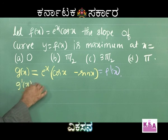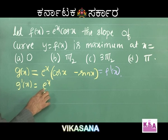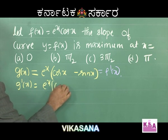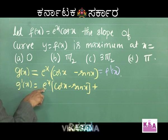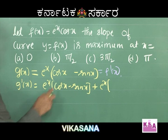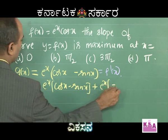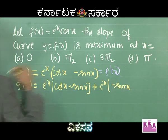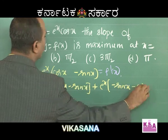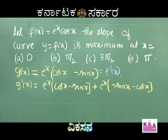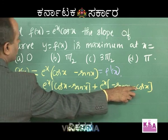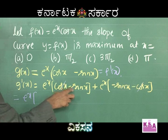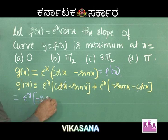Then keeping eˣ constant, differentiate (cos x − sin x). Differentiation of cos x is −sin x and differentiation of sin x is cos x, so we get −cos x. Simplifying: eˣ — we have cos x and minus cos x, which cancel. We have −sin x − sin x = −2 sin x.